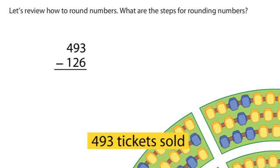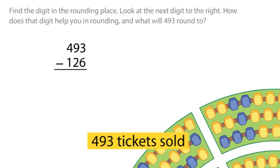Let's review how to round numbers. What are the steps for rounding numbers? Find the digit in the rounding place. Look at the next digit to the right. How does that digit help you in rounding, and what will 493 round to?